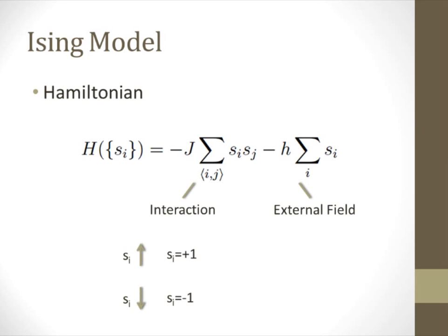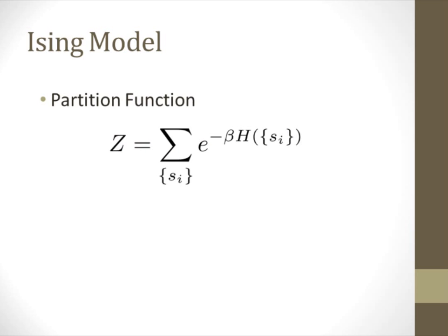To get information about a system, what we would really like to know is the partition function. Once the partition function is determined, we can solve for just about everything we would like to know about the system. The partition function can be written in terms of the Hamiltonian, as shown here, but we can solve this more easily if we define the partition function in terms of the trace of a matrix. This is where the transfer matrix method comes into play.